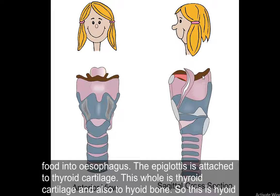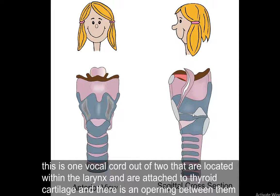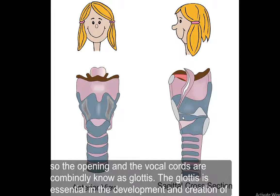With the elevation of the hyoid bone, the epiglottis also directs food into the esophagus. The epiglottis is attached to the thyroid cartilage and also to the hyoid bone, which is technically not part of the larynx. The term glottis is used to describe the part of the larynx that contains the vocal cords. There are two vocal cords located within the larynx and attached to the thyroid cartilage, with an opening between them — the vocal cords and the opening together are known as the glottis.